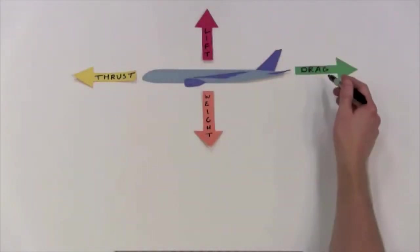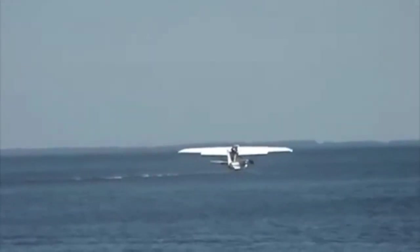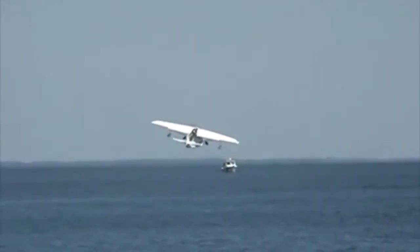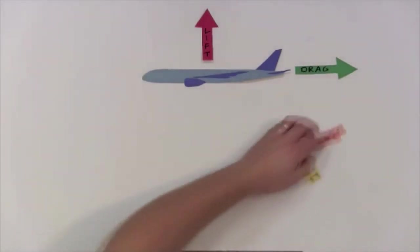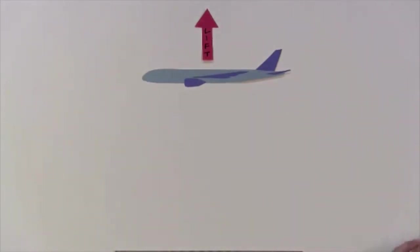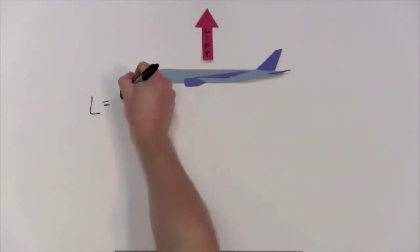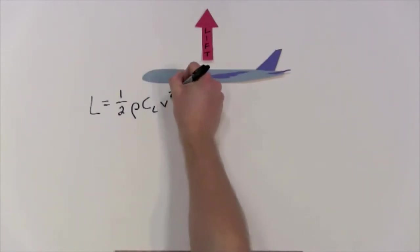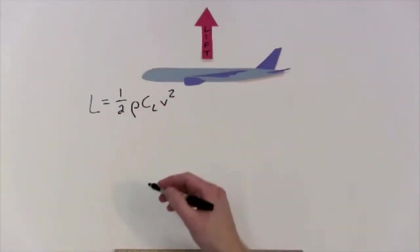So these are our four forces on the airplane. But perhaps you're thinking, this is really cool and everything, but how do we increase and decrease the airplane's lift to move up and down? That's a great question. Let's look at the equation for the magnitude of lift per unit wing area. We'll call that L. L equals one-half times rho times C_L times V squared. It's that simple.